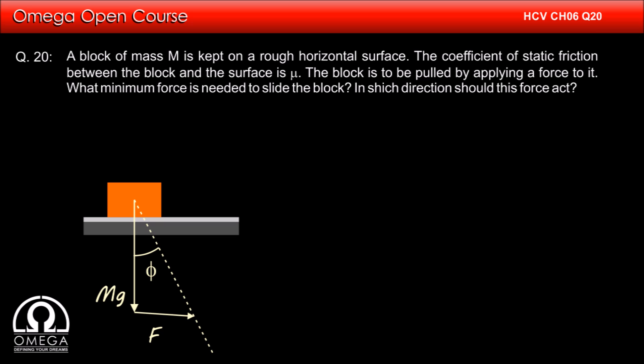Now there are infinitely many values of the magnitude and infinitely many directions where we can apply force such that the resultant of this force and the gravity is at an angle phi with the normal. But as can be seen in the diagram, the magnitude of the force will be minimum when it is perpendicular to the resultant.